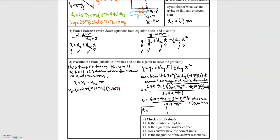We start with the y-direction equation to solve for time. Substituting everything in, we find we need to use the quadratic formula. This gives t equals 6.47 plus or minus 34.9, divided by negative 9.8 m/s². Choosing the positive value in the numerator yields a negative time, which is physically meaningless, so we choose the negative solution. Subtracting and dividing, the time for the golf ball to reach the ground is 2.90 seconds.